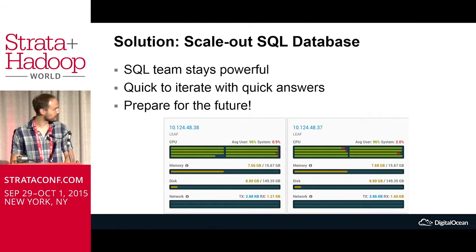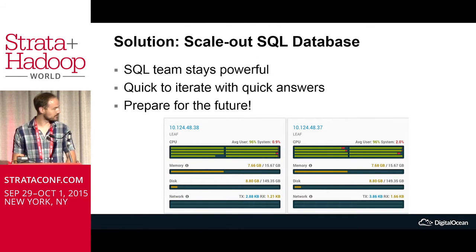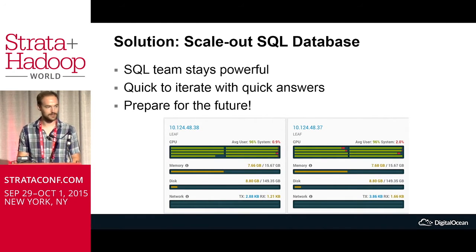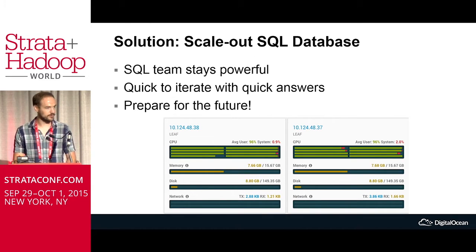Here's a screenshot of our MemSQL cluster. Those green bars are the CPUs being actually utilized across two nodes, and we can scale those out — if we need more nodes, we'll add more nodes. And this keeps us in SQL. This allows our team that knows how to write SQL a performant understanding of the data. It's the same sort of data, just in a different database.